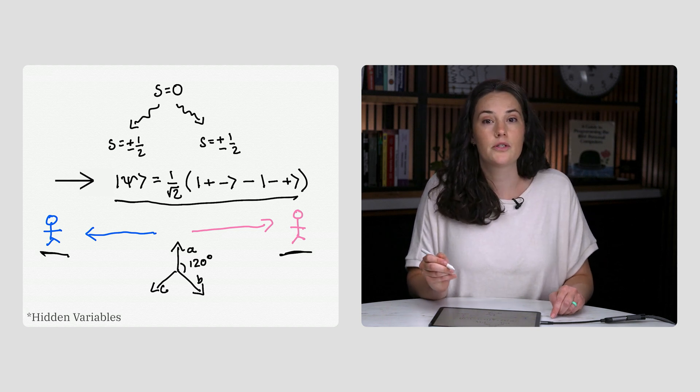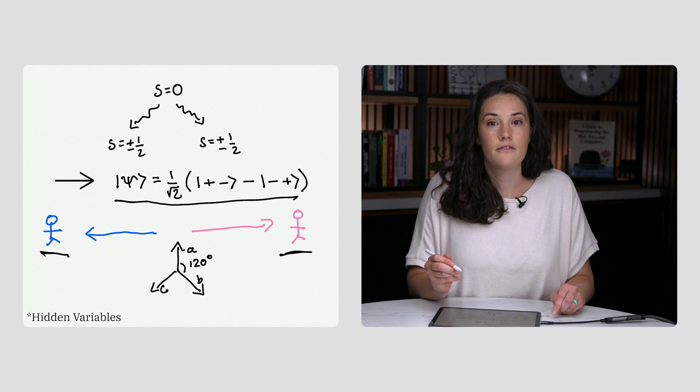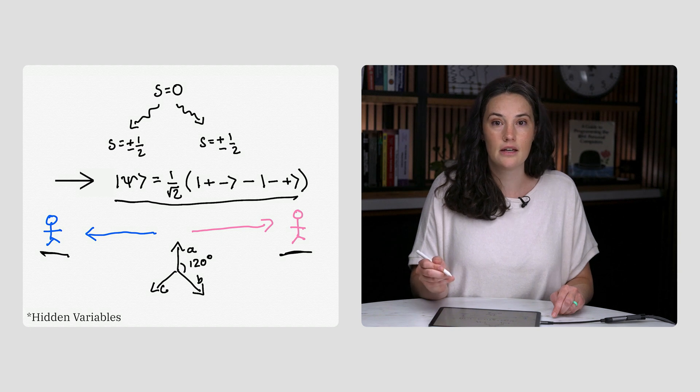Let's see how each theory affects these correlations. In the hidden variables treatment, there's a secret set of instructions prior to measurement that already determines what Lucas will measure along each of the three axes.